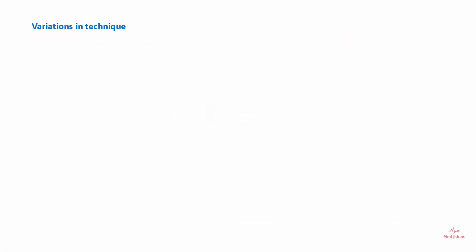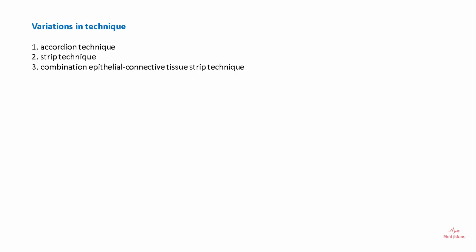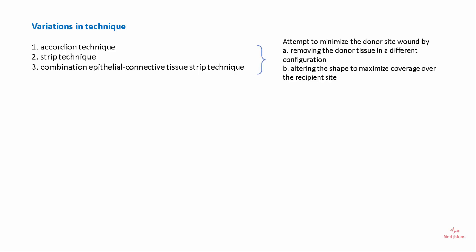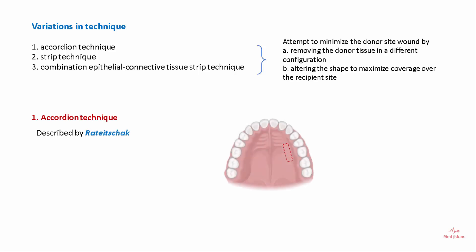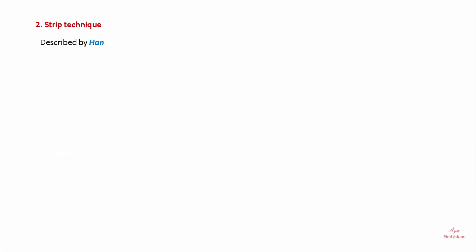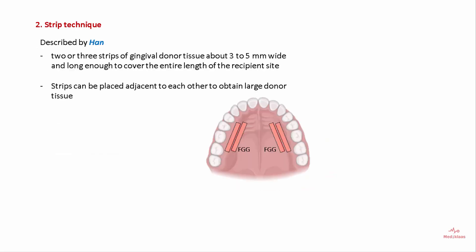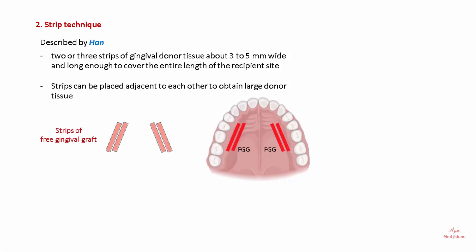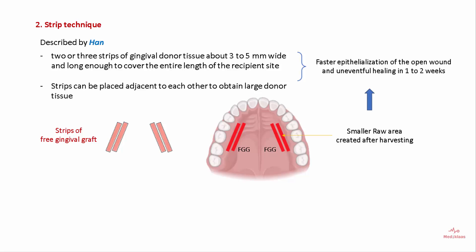There are variations in techniques for harvesting free gingival grafts: the accordion technique and the strip technique. These were introduced to minimize the donor site wound by removing tissue in different configurations and altering the shape to maximize coverage over the recipient site. The accordion technique, given by Rad Shack, involves expansion of the graft by making alternate incisions on opposite sides, leading to wider coverage. The strip technique, given by Han, involves harvesting two or three strips of gingival donor tissue about 3 to 5 mm wide, which are placed adjacent to each other. This leaves a smaller raw area, helping faster epithelialization and uneventful healing in one to two weeks.